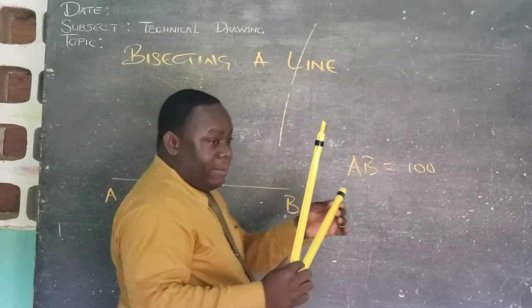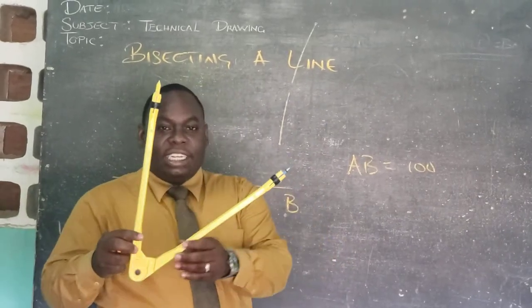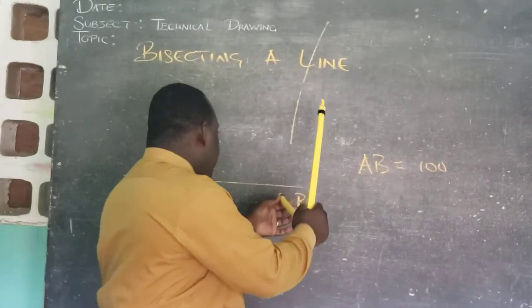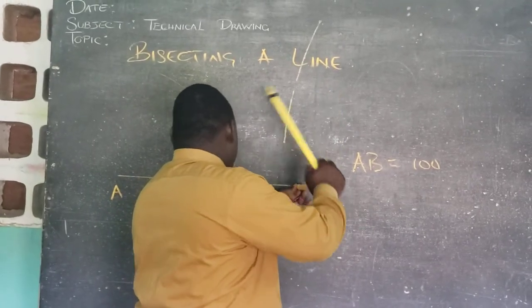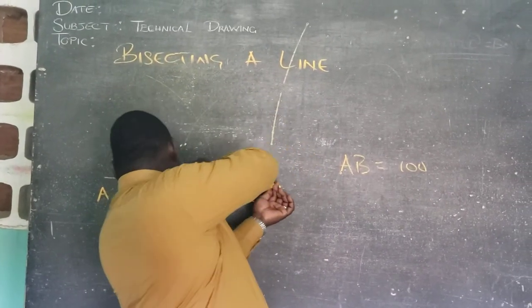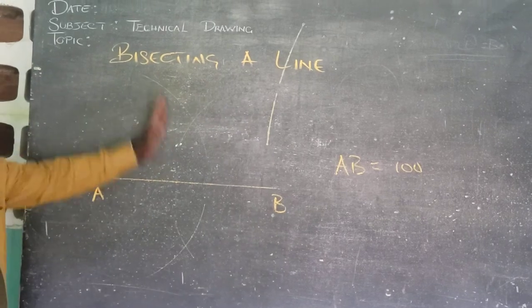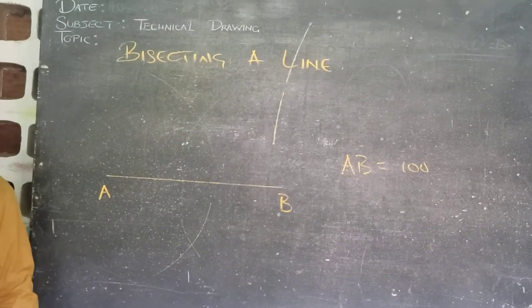And at B, without adjusting the radius of our compass, we are going to be going to B. And we are going to be cutting those two arcs that we have drawn.